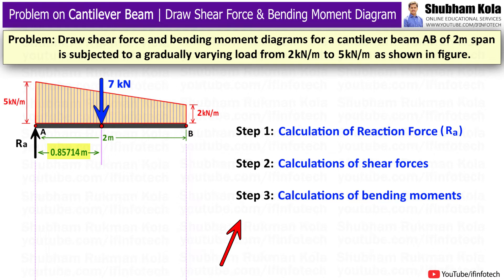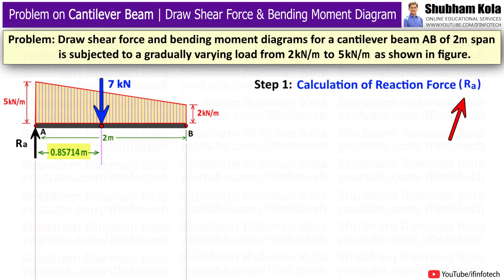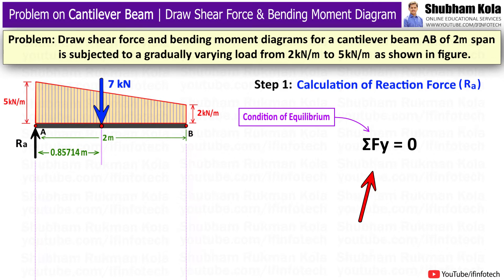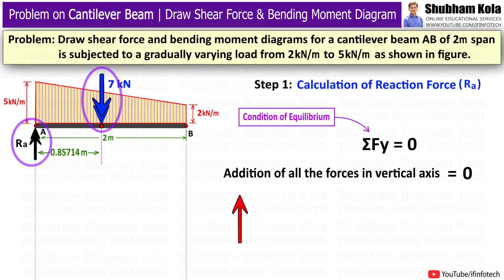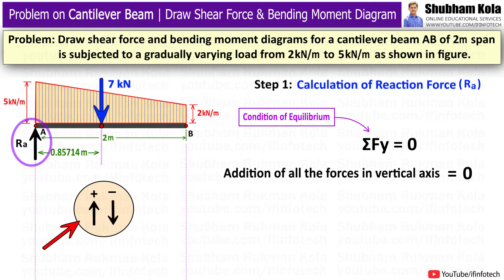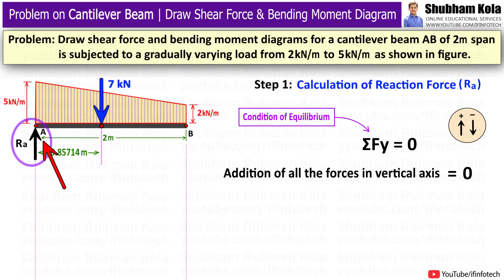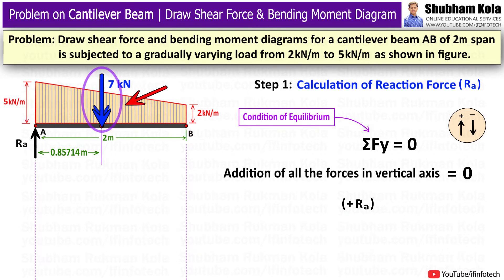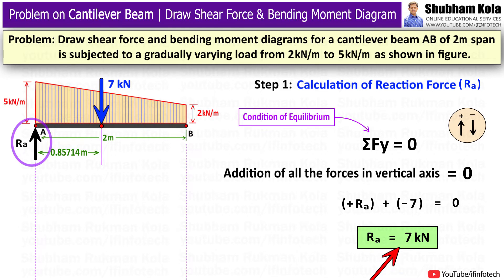We are going to solve this problem in three steps. In the first step, we calculate the value of support reaction force Ra. Using the condition of equilibrium, i.e. ΣFy = 0, meaning the sum of all forces in the vertical direction equals zero. Upward forces are considered positive and downward forces negative. Ra is the vertical reaction force acting upward, so it is added as positive. The converted point load of 7kN acts downward, so it is added as negative. From this, the value of reaction force Ra equals 7kN.